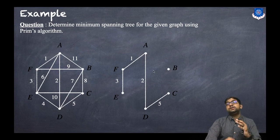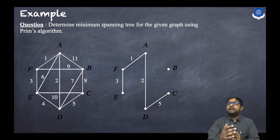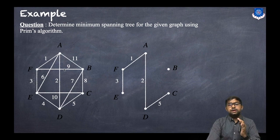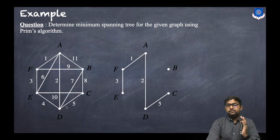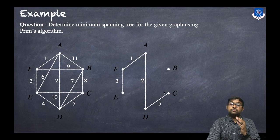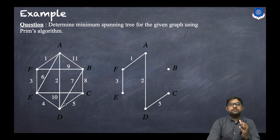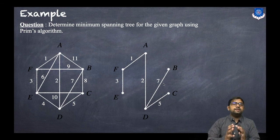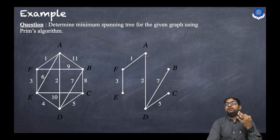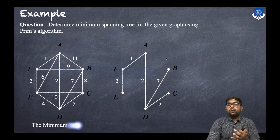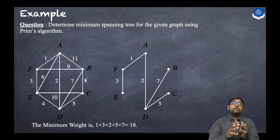Now we have five vertices. We check each adjacent edge: for A — weights 11 and 6; for F — weight 9; for E — weights 6, 10, and 4 (not available); for D — weight 7; for C — weight 8. The minimum remaining valid weight is 7, so we add that edge. All vertices are now connected without any cycle, so the minimum spanning tree is complete.